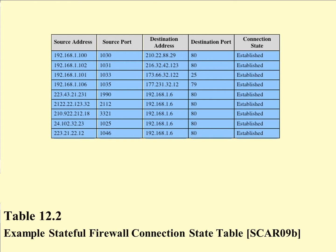Here is an example table for a stateful firewall. You can see the source address, destination address going from internal to external or external to internal, the ports, destination ports, and that the state was established — the connection was established. Note there is a typo in the book: the first octet of an IP address cannot be higher than 255, so that entry should just read something like 212.